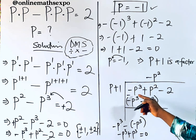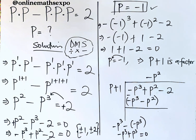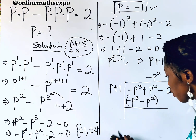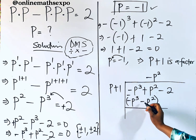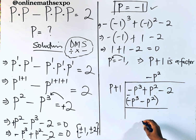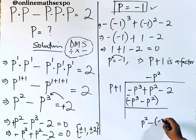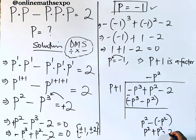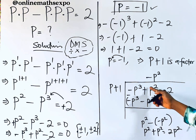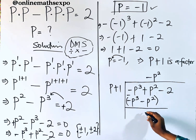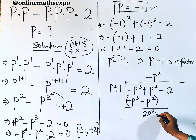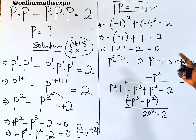Now we have p² take away −p², which gives p² + p² = 2p². So after subtracting we have 2p². Bring down the −2 and repeat the process.